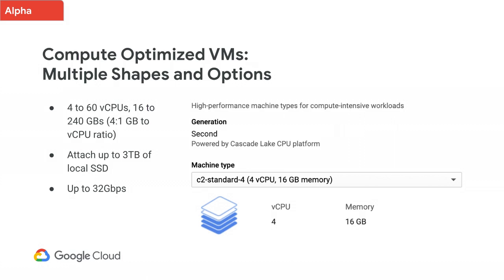Let's talk a little bit more about compute-optimized VMs. As you can see, they already come with multiple shapes and options. Today, they range from 4 to 60 vCPUs, from 16 to 240 gigabytes of memory, offering a 4-to-1 gigabyte per vCPU ratio. They also enable you to use multiple storage options — network-attached storage, persistent disk, or local SSD — as with any other GCE instance.